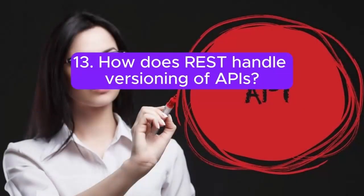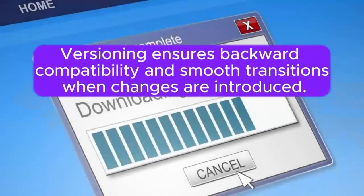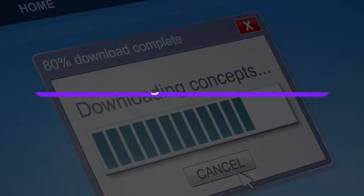Question 13: How does REST handle versioning of APIs? API versioning in REST can be achieved through URI versioning, custom headers, or query parameters. Versioning ensures backward compatibility and smooth transitions when changes are introduced.